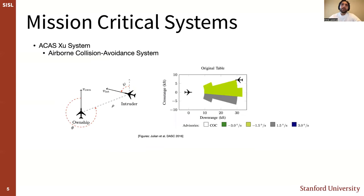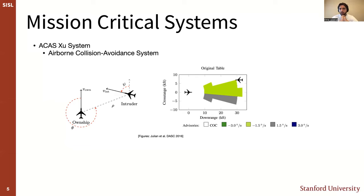Another kind of system we're interested in are mission-critical systems. A running example we'll use for some of our benchmarks is the ACAS-XU airborne collision avoidance system. This version is specifically designed for unmanned air vehicles or drones. At a high level, as the airspace becomes more and more densely used, we want to equip air vehicles with a system that helps them avoid collisions.